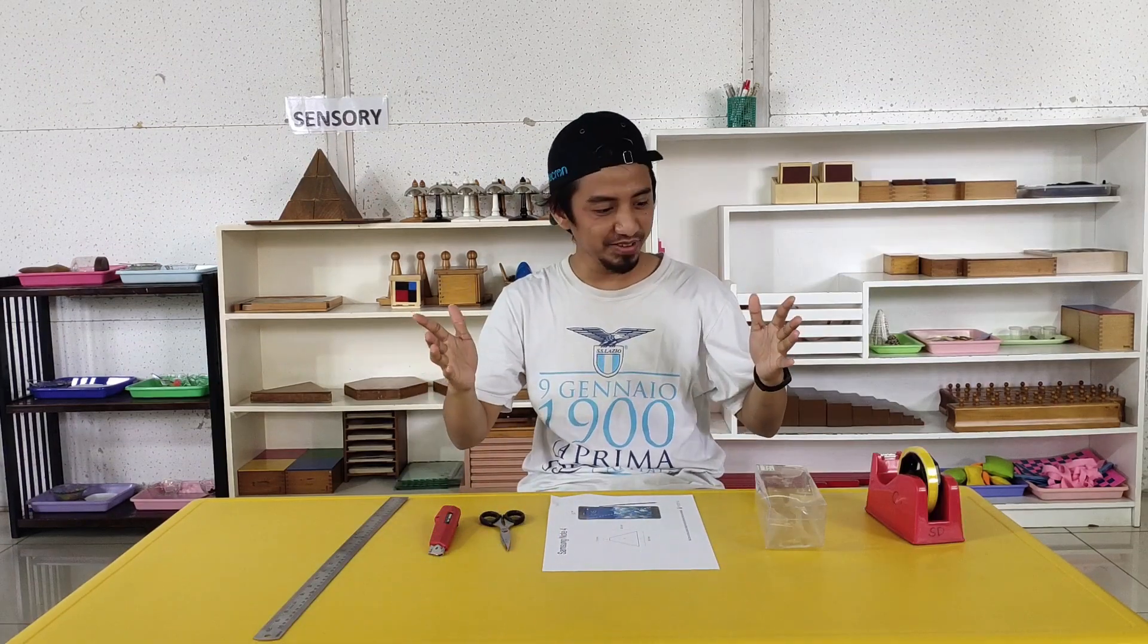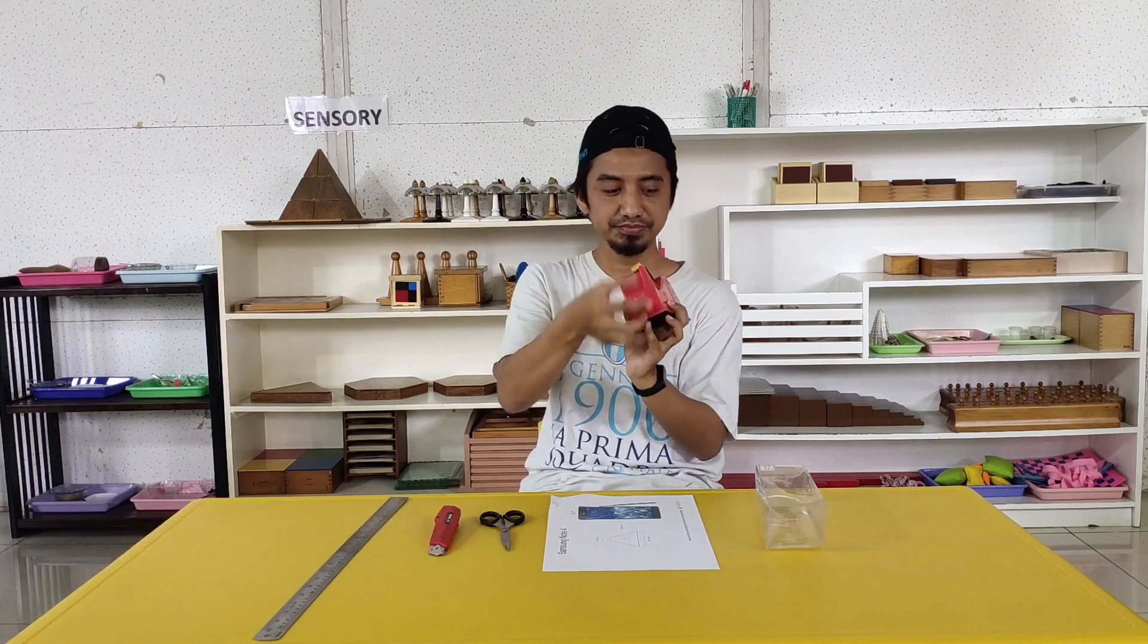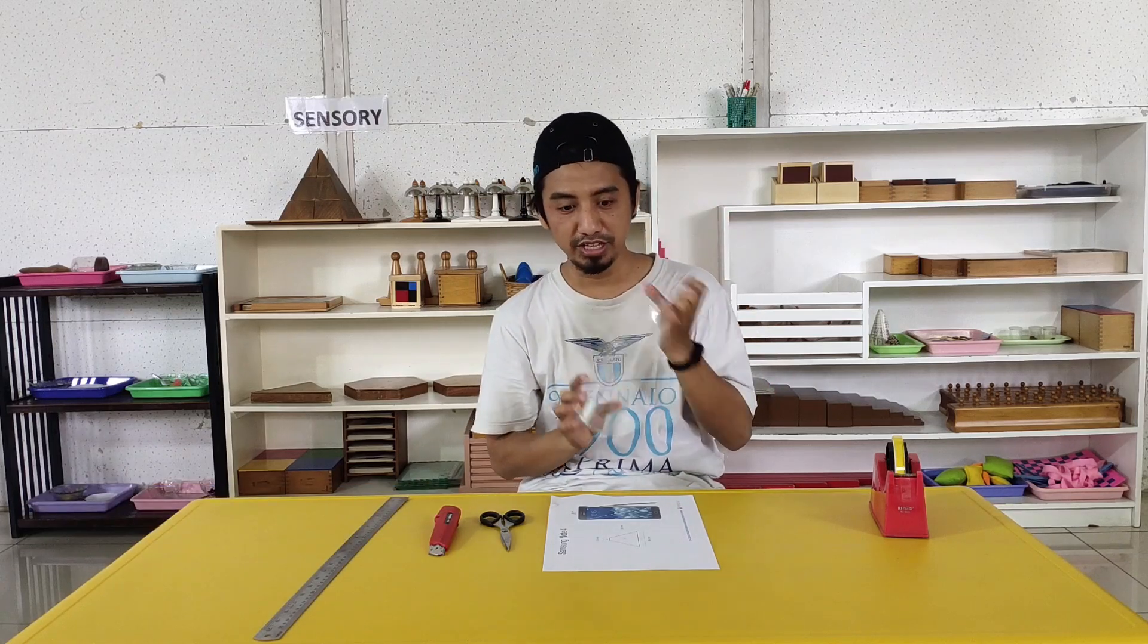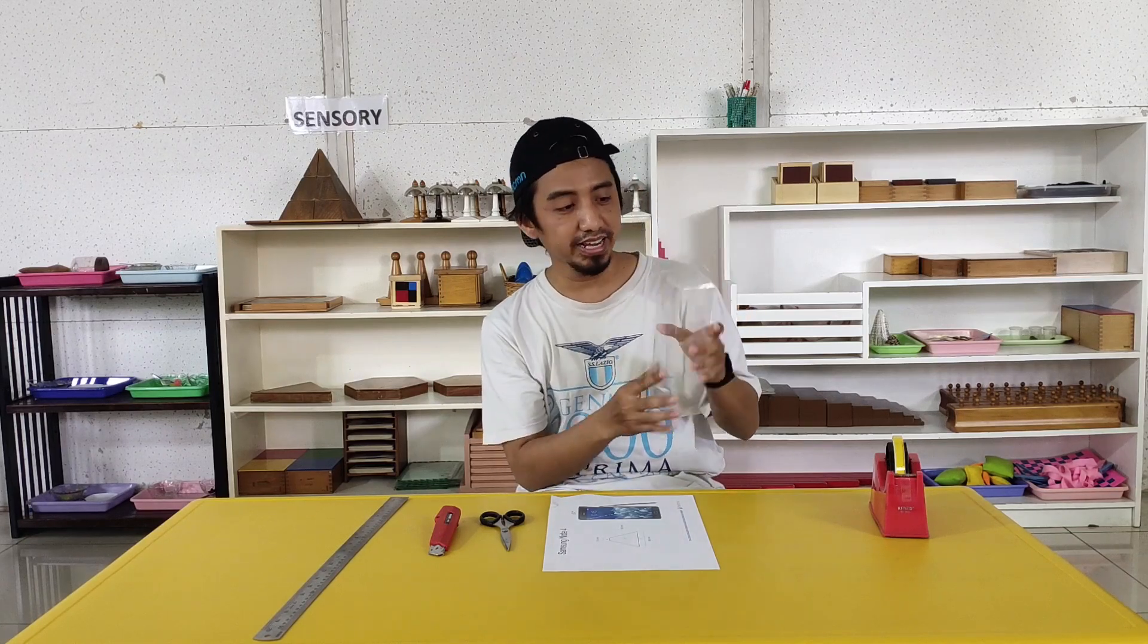Hi, I think we need some materials here. Okay, let's get the materials. Yeah, this is some materials that we need. Okay, first, I have a tape. Make sure the tape is transparent. For plastic, make sure you choose the stiff plastic, not too elastic, but the stiff one. But if you have a plastic from a folder, you can use the plastic from a folder. The most important thing is it needs to be transparent and stiff.